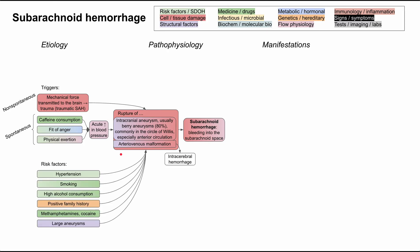There are other risk factors as well. Hypertension — chronic hypertension — puts you at risk. Smoking puts you at risk. High alcohol consumption predisposes you to subarachnoid hemorrhage as alcohol damages blood vessels. A positive family history also predisposes you. Drugs that increase blood pressure, generally stimulants like methamphetamines and cocaine, are risk factors. And having a large aneurysm predisposes you to rupture compared to a smaller one.